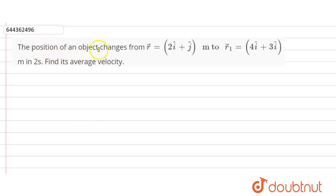The position of an object changes from r equals 2i plus j cap to r1 equals 4i plus 3—here this will be j not i, okay, this will be j, 3j cap. So in two seconds, find the average velocity. We have to find the average velocity. We know the distance between two points...